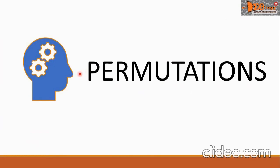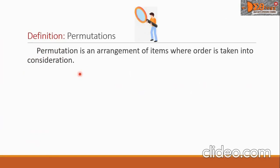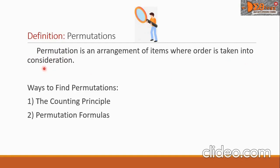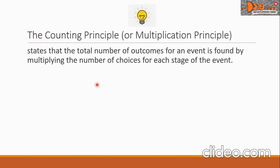Hi everyone, today we're going to study permutations. Let us define permutation. Permutation is an arrangement of items where order is taken into consideration. There are two ways to find permutations: number one, the counting principle, and number two, permutation formulas. The counting principle states that the total number of outcomes for an event is found by multiplying the number of choices for each stage of the event.